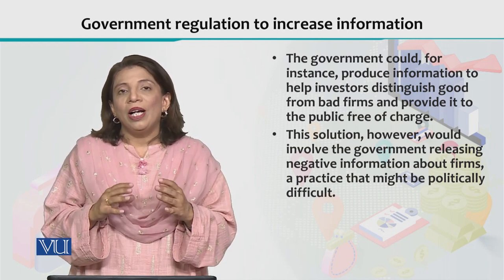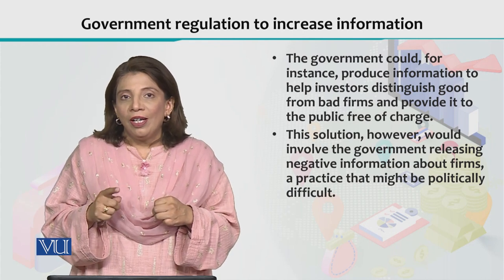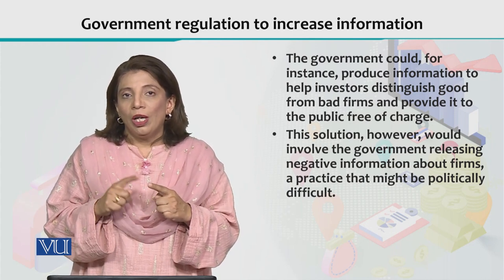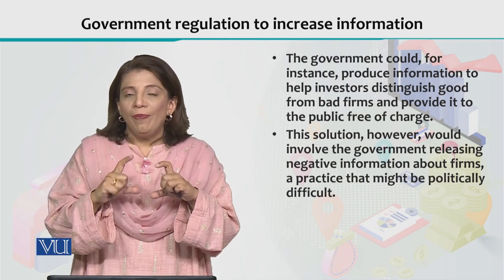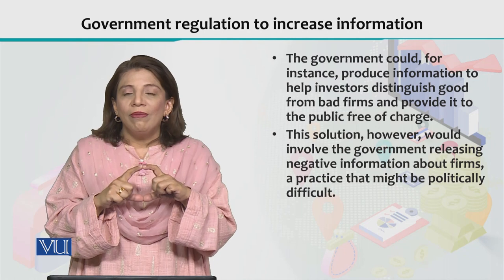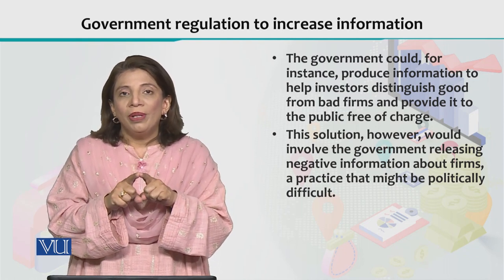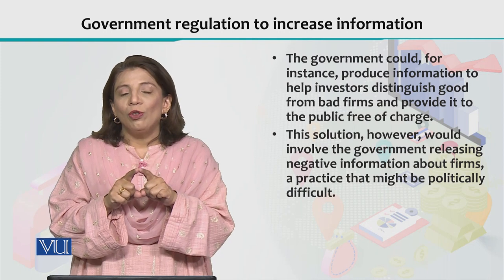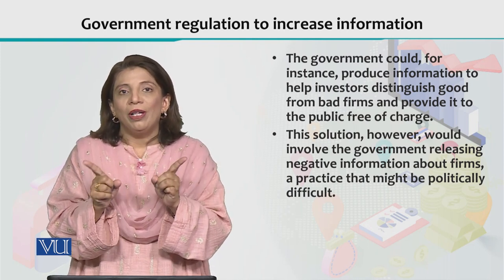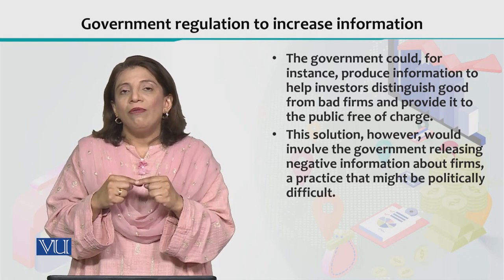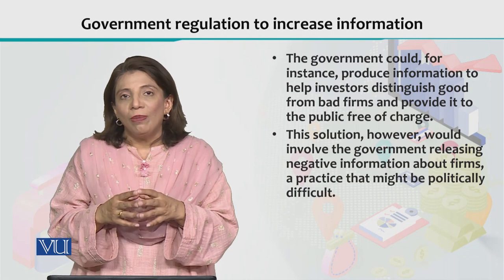Jaise mein ne pehle bataya, information asymmetry ka matlab hai ke jo seller hai uska level of information about that particular financial instrument, aur jo buyer hai uska level of information about the same financial instrument, woh dono barabar nahi hai. Isko hum kehte hain information asymmetry. Agar woh dono barabar hain, hum kahenge information symmetrical hai, dono ends pe barabar information hai.